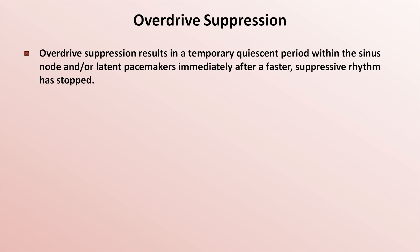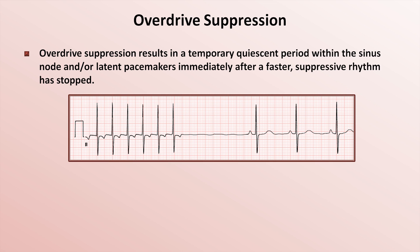For example, consider the following rhythm strip. In the first third of the strip, there is a regular narrow complex tachycardia at a rate of about 150 as a consequence of a reentrant rhythm such as AVNRT. Then the reentrant rhythm abruptly stops — perhaps a spontaneous block in one limb of the reentrant circuit, or maybe the patient performed a valsalva maneuver or received a nodal blocking medication. Notice what happens after the tachyarrhythmia terminates: there's nothing. The patient has no electrical activity from the sinus node or anywhere else for over two seconds before the sinus node restarts at a rate of about 60. The failure of the sinus node to pick up the rhythm immediately is a consequence of overdrive suppression.